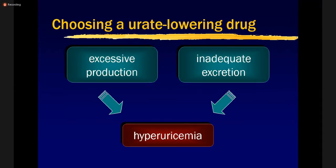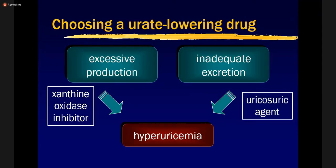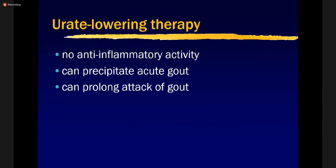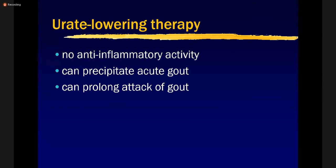In choosing urate-lowering drugs, the decision depends on excessive production or inadequate excretion. Xanthine oxidase inhibitors and uricosuric agents together constitute urate-lowering therapy — including febuxostat, probenecid, and allopurinol — both decreasing production and enhancing excretion. These drugs have no anti-inflammatory activity, so inflammation must be controlled first before starting urate-lowering agents.